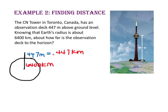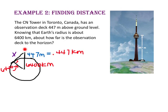Since we want to know how far the observation deck is to the horizon, let's draw the tangent to the circle from the top of the observation deck to the horizon of the Earth. Since a tangent to a circle is perpendicular to the radius at the point of tangency, let's draw in a second radius. We have created a right triangle with one leg 6,400 kilometers, and the hypotenuse 6,400 plus 0.447 kilometers. We are looking for the length of this leg, which is from the observation tower to the horizon.